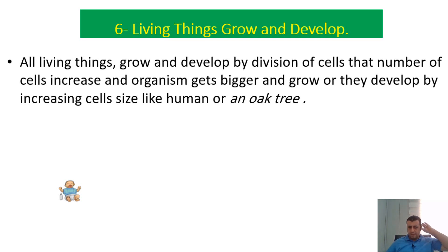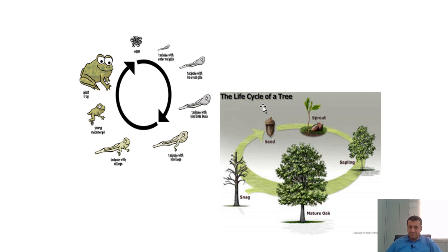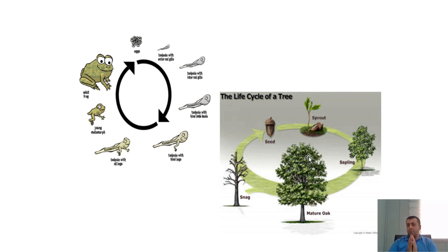For example, when we put a seed under the soil, that seed germinates, grows, develops further, and becomes a very big tree. That means living things grow and develop. Even for human beings: first a baby, then childhood, then adulthood — humans grow and develop.